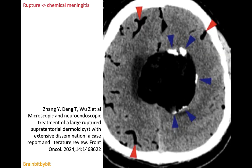These are CT images at another level where you can again see the fatty substance in the subarachnoid space. And if there is rupture into the ventricles, it typically presents as a fatty level floating on top of the CSF.